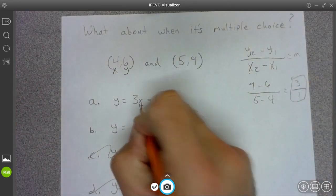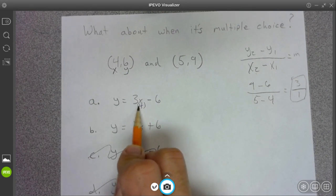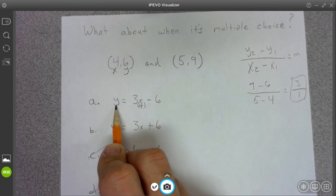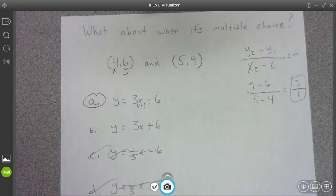Alright, so 4 for x, 3 times 4 is 12, 12 minus 6 is 6. So you get y equals 6. That is our answer.